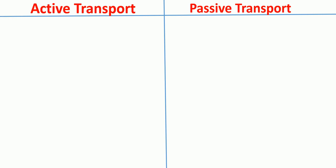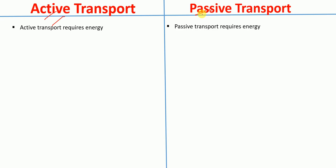In this video, I'm going to talk about the differences between active transport and passive transport. The word 'active' means something that requires energy, while 'passive' means something that does not require energy. So: active transport requires energy, and passive transport does not require energy.